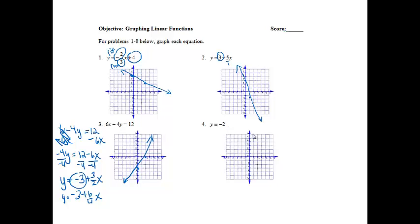All right, y equals negative 2 is a horizontal line. So I'm going to go down to y equals negative 2. And then it's just a horizontal line straight across.